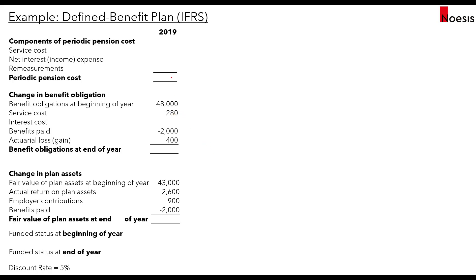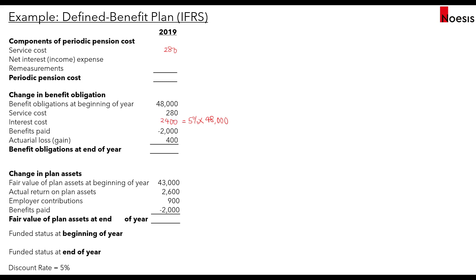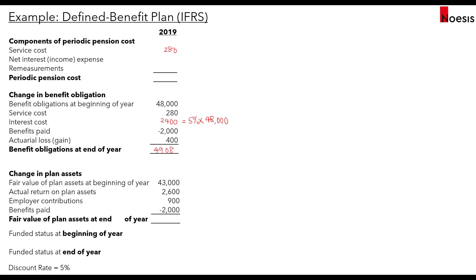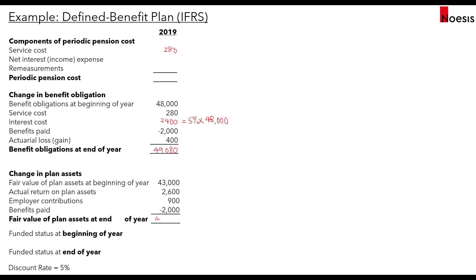Service cost is filled in directly as 280. The interest cost is the discount rate times the beginning PBO: 5% times 48,000 equals 2,004. The ending PBO is therefore 48,000 plus 280 plus 2,004 minus 2,000 plus 400, which equals 49,080. For plan assets: 43,000 plus 2,006 plus 900 minus 2,000 equals 44,500.